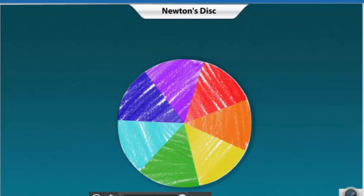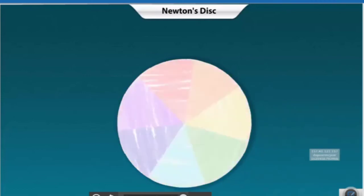Now, spin the disc. The disc will appear white in color. Remember that the disc just appears to be white. It does not really reflect back white light.